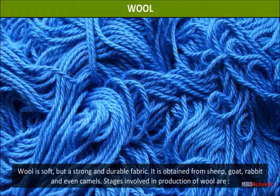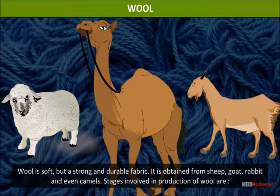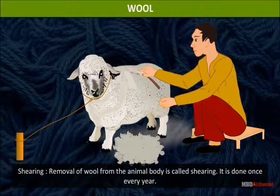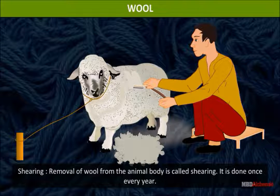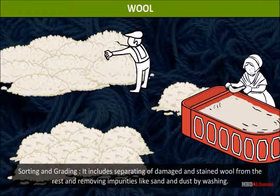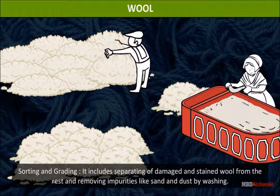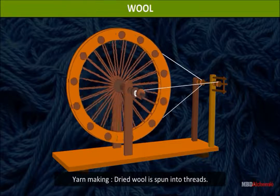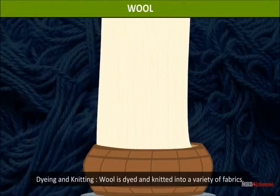Wool: Wool is a soft but strong and durable fabric. It is obtained from sheep, goat, rabbit, and even camels. Removal of wool from the animal body is called shearing, and it is done once every year. Sorting and grading involves separating damaged and stained wool and removing impurities like sand and dust by washing. The dried wool is then spun into threads in yarn making, and finally wool is dyed and knitted into a variety of fabrics.